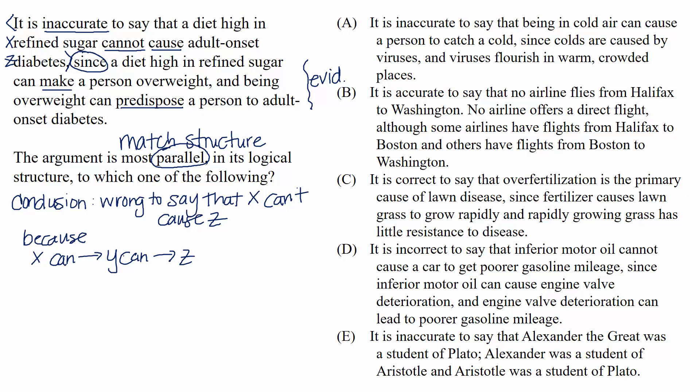These questions can potentially be time-consuming on test day because you're looking at six arguments in total. So one thing we can do is to eliminate any of the choices that don't have the same kind of conclusion that the passage has. So maybe we can get rid of some choices without having to actually read the entire choice. Let's take a look.